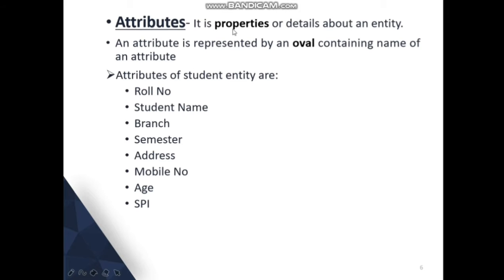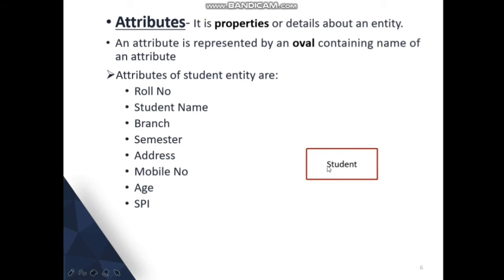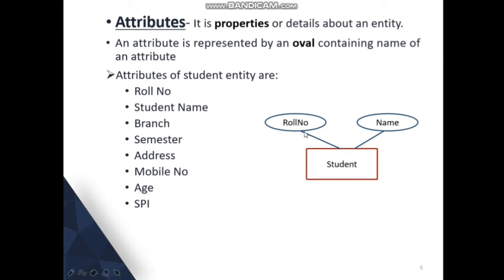Attributes means a property or the details about an entity. For example, for a student entity, the properties that define a student include roll number, student name, branch, semester, address, mobile number, age, SPI, and many more. An attribute is represented by an oval containing the name of the attribute, and it is connected to the entity via a line.